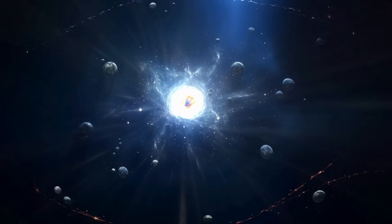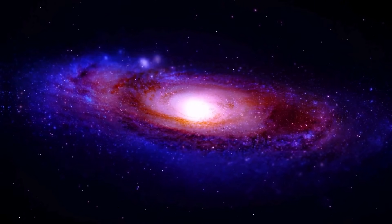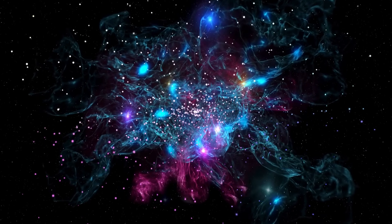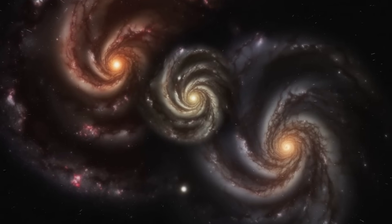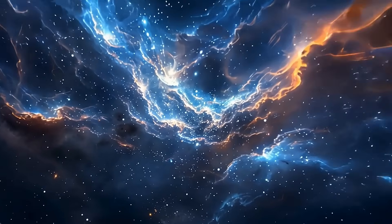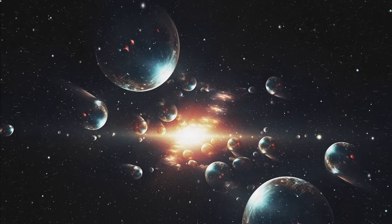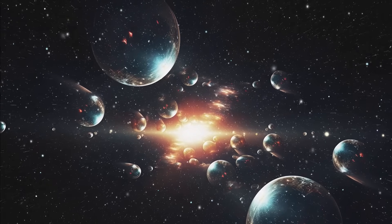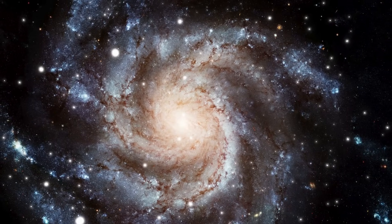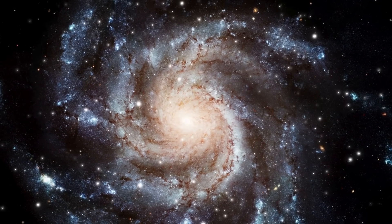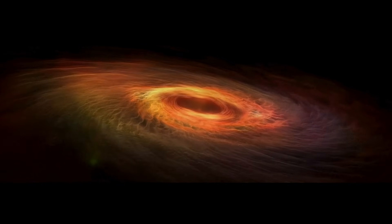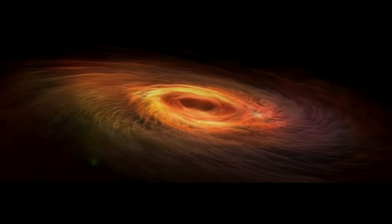When the distribution was graphed in three dimensions, it formed a complex web, one nearly identical to the cosmic web of filaments and voids we see today. Coincidence? Perhaps. But when scientists ran the numbers, they realized the spacing of these galaxies matched models of dark matter distribution. Something wasn't just forming; something was orchestrating a universe we're only beginning to understand.